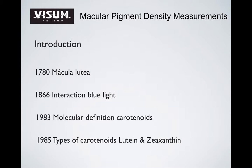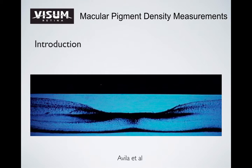In 1780, the macular pigment was first described. In 1866, interaction of blue light with the macula was reported. In the 80s, the molecular identification of carotenoids, lutein and zeaxanthin, were discovered. This classical image by Avila and colleagues from the 70s shows the distribution of macular pigments in the human retina.